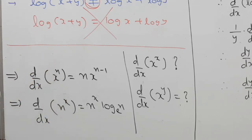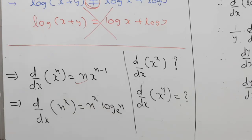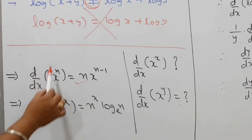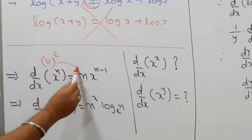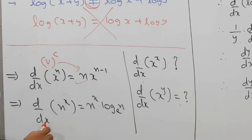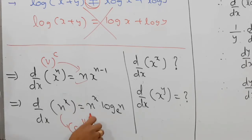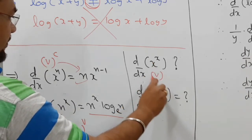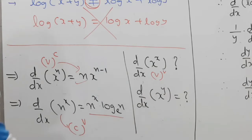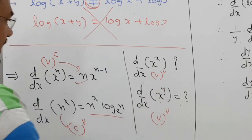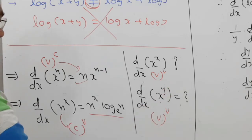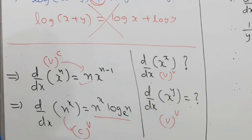Recall derivative formulas: derivative of x^n is n·x^(n−1) (constant exponent). Derivative of n^x is n^x · log n (constant base). Variable raised to constant uses the first formula; constant raised to variable uses the second. But for variable raised to variable form — where both base and exponent are variable — there is no particular formula.